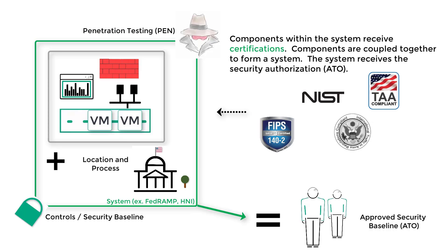In summary, a system is a collection of everything that provides an IT service, like email. A certification is typically on components that are found within the system.